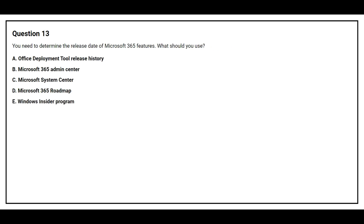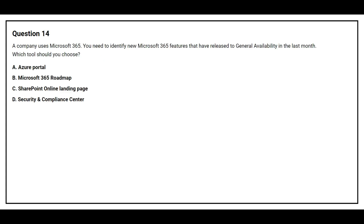Question number 13. You need to determine the release date of Microsoft 365 features. What should you use? Option A: Office Deployment Tool release history. Option B: Microsoft 365 Admin Center. Option C: Microsoft System Center. Option D: Microsoft 365 Roadmap. Option E: Windows Insider Program. The correct answer is Option D, Microsoft 365 Roadmap.